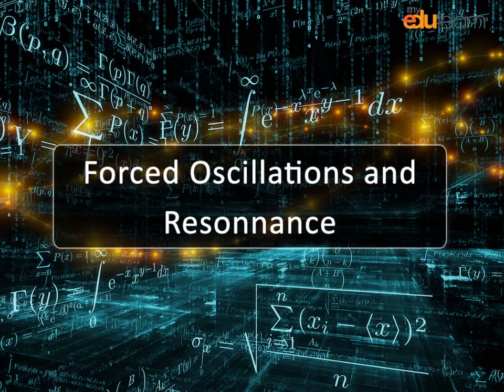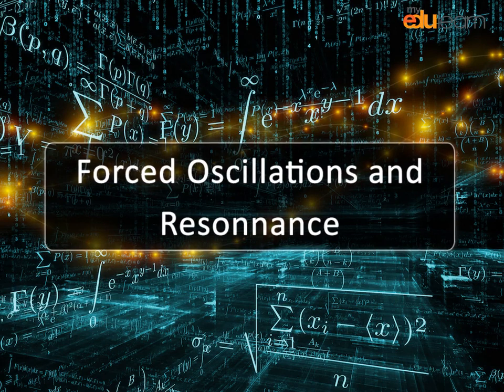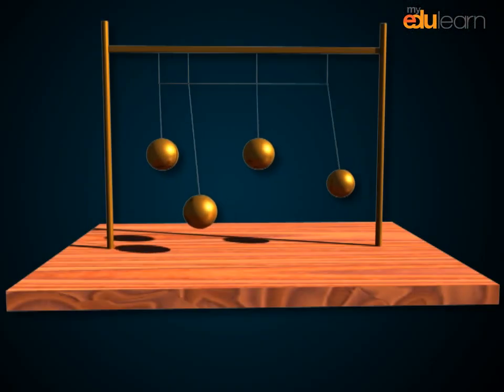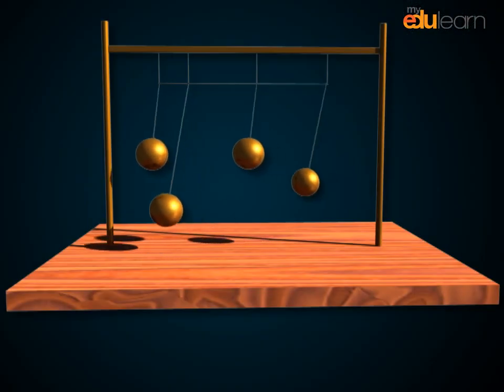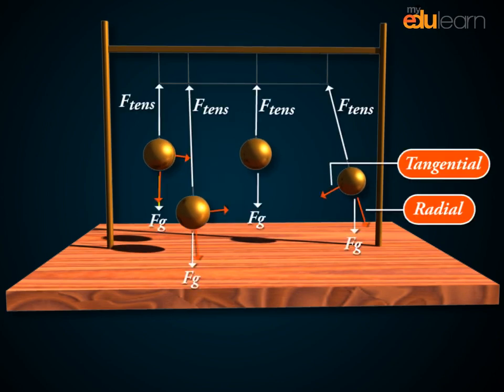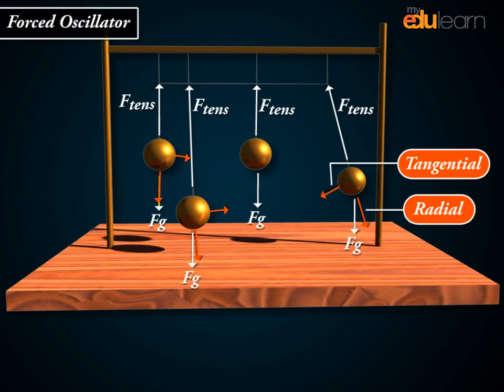Forced Oscillations and Resonance. If a force is continually or repeatedly applied to keep the oscillation going, it is a forced oscillator. A common example of a forced oscillator is a damped oscillator driven by an external force that varies periodically.